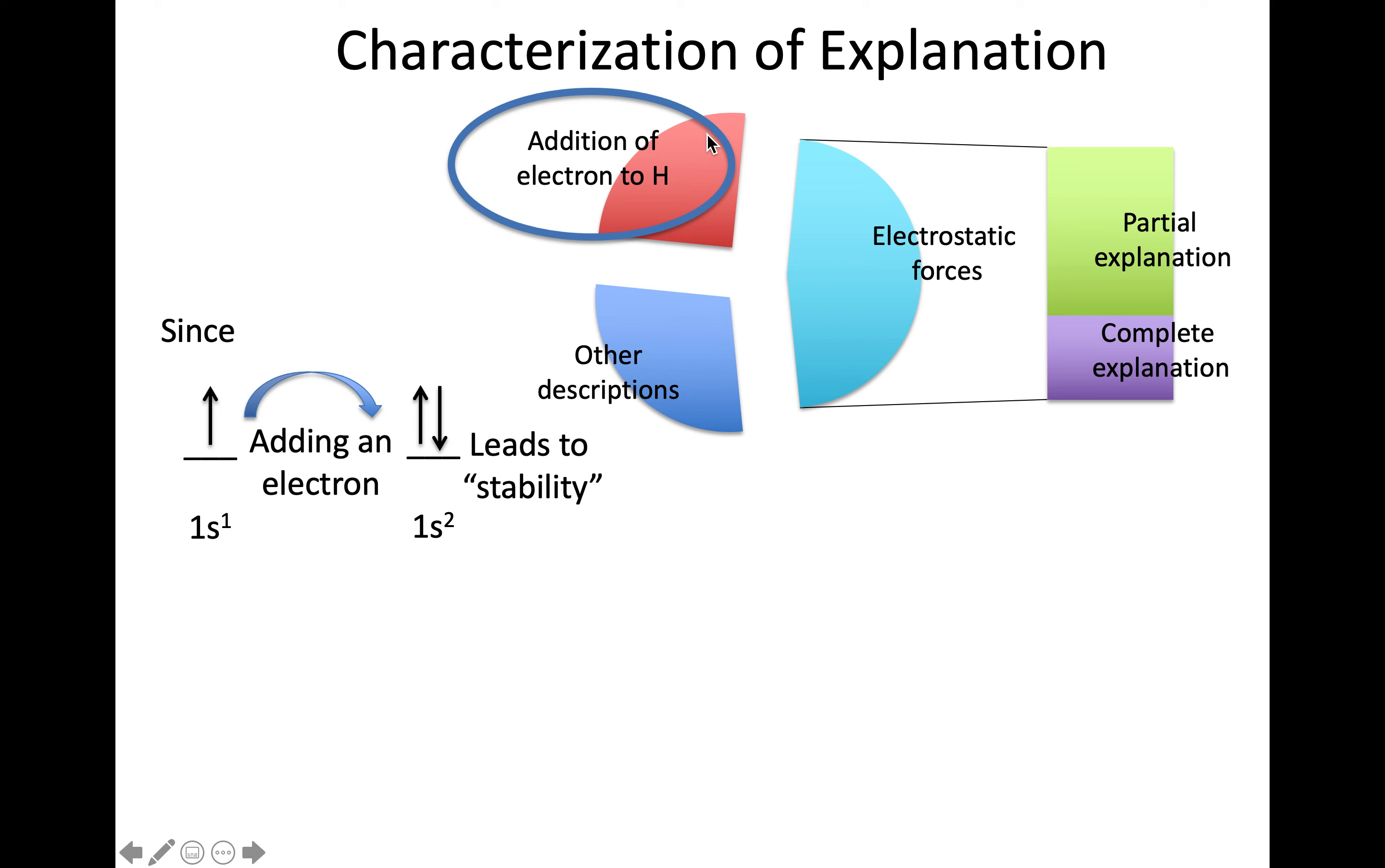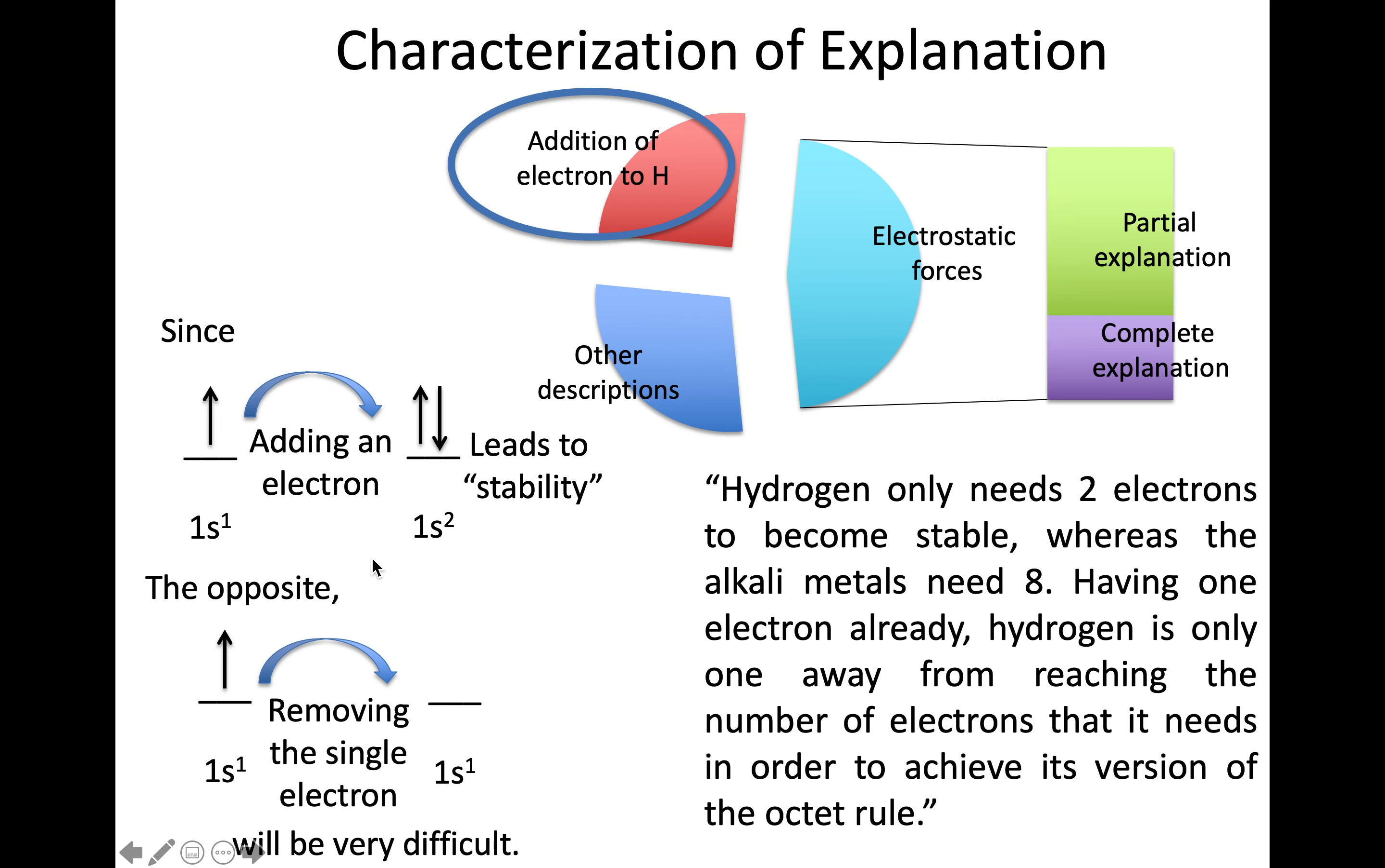What does it mean to add an electron to a hydrogen atom and use that to explain ionization energy? There's a lot going on there. Students are saying if adding an electron leads to stability, the opposite must be very difficult. But ionization energy is about removing the electron, not adding it. It's fascinating that students make this connection, reasoning that if adding it would be beneficial, removing it must be difficult. Not the case at all, but you can see that logic. They note hydrogen only needs two electrons to become stable, whereas alkali metals need eight. It's all about achieving the octet, even when we're asking about removing the electron.